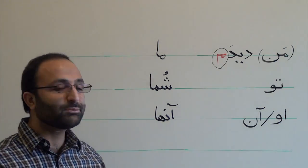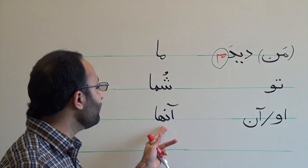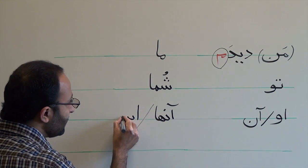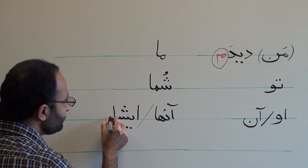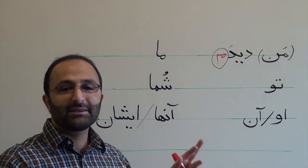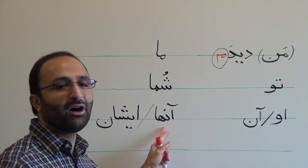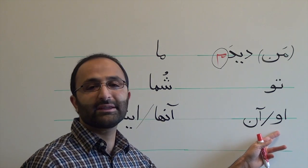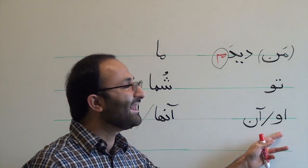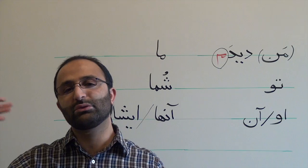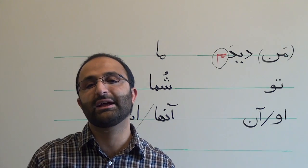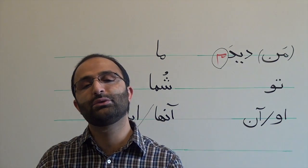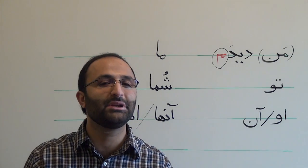The last point is related to the third person plural. We have 'anha,' which means they. But there is another one — 'ishan.' Ishan can be used instead of 'anha,' but it is exclusively used to refer to the third person singular as a sign of being polite. For example, if I want to refer to someone who is not here, instead of saying 'u' I say 'ishan.' It is a kind of referring to that person as a plural — it's the sign of being polite and respectful.